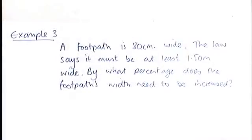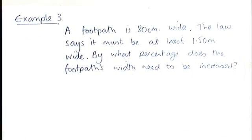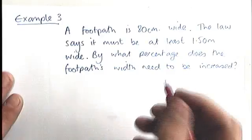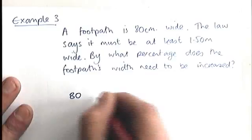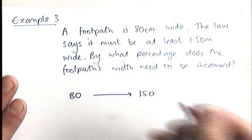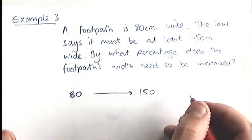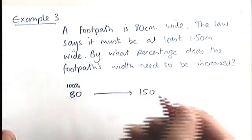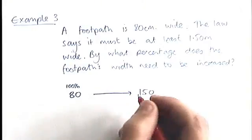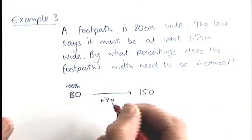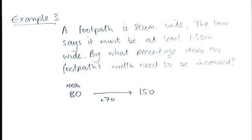One last example now. And this time we have a footpath. It's 80 centimeters wide. The law says it must be at least 1 meter 50 wide. Therefore, when the council will have to come along and widen the footpath, what percentage does it need to be widened by? So we're going to start with this 80 centimeters and it's going to go up to 1 meter 50. Notice how I've changed the units into centimeters there. And what we've got to do now is we've got to take our 100%. We've got to figure out how much has been added on. Well, the amount that's been added on is 70. 70 centimeters needs to be added on to make this footpath the correct width.